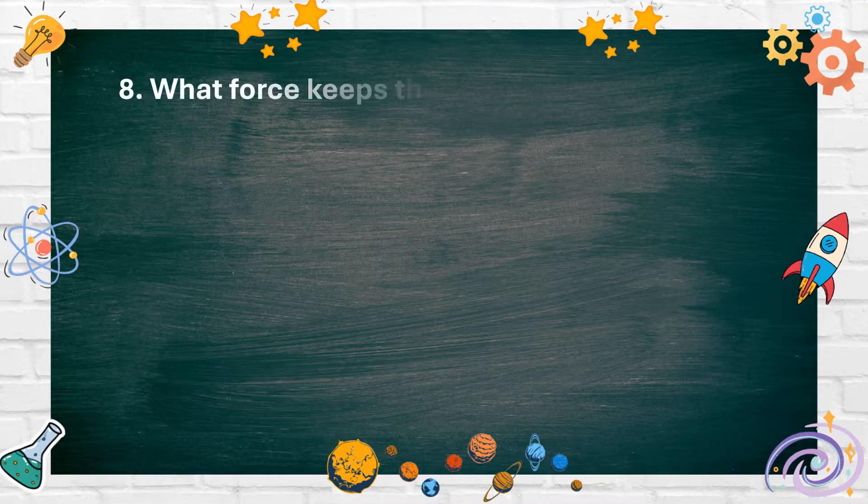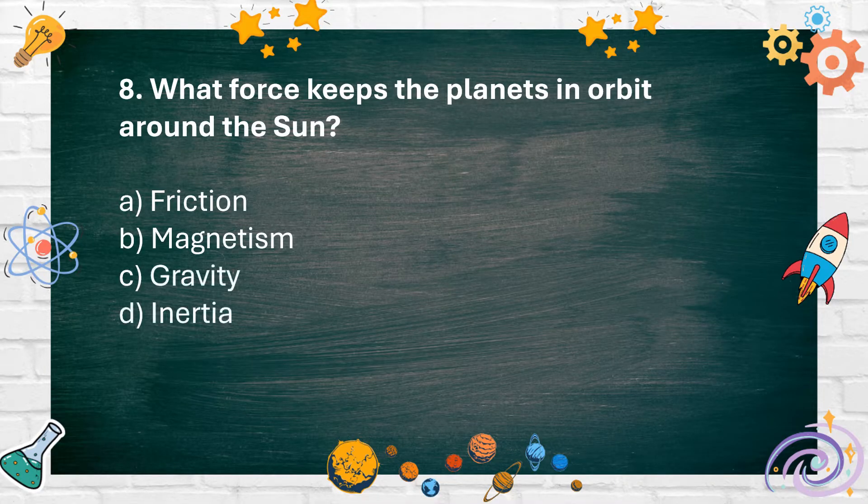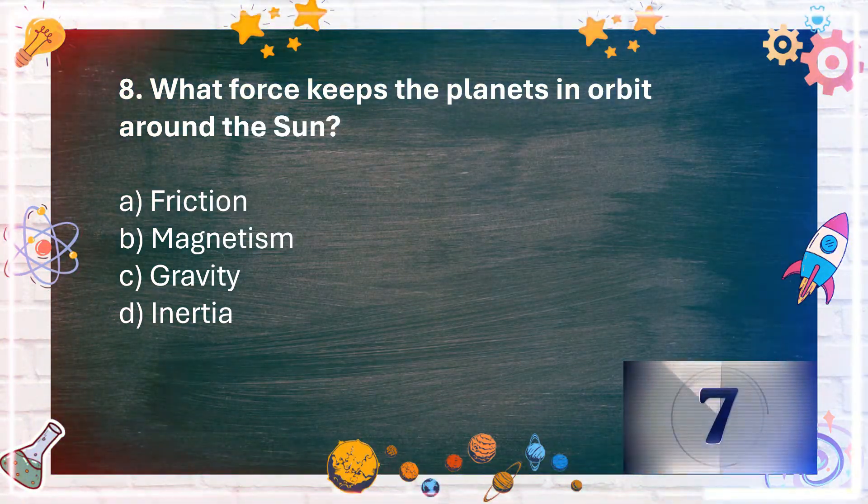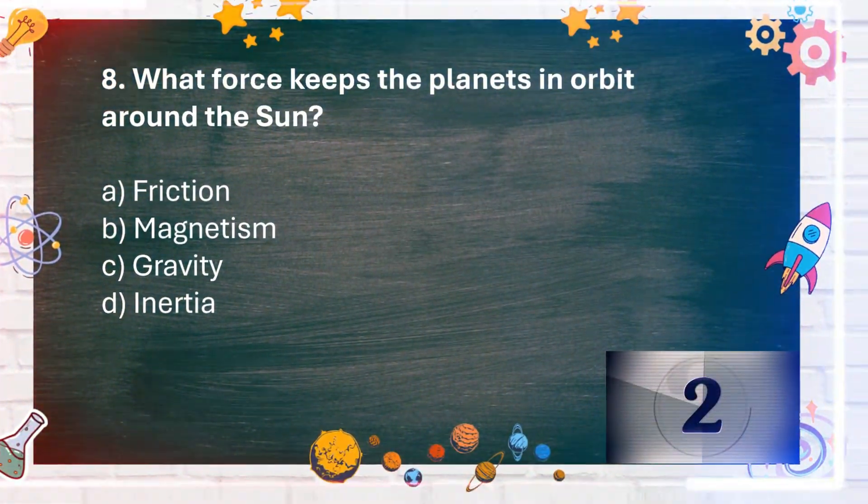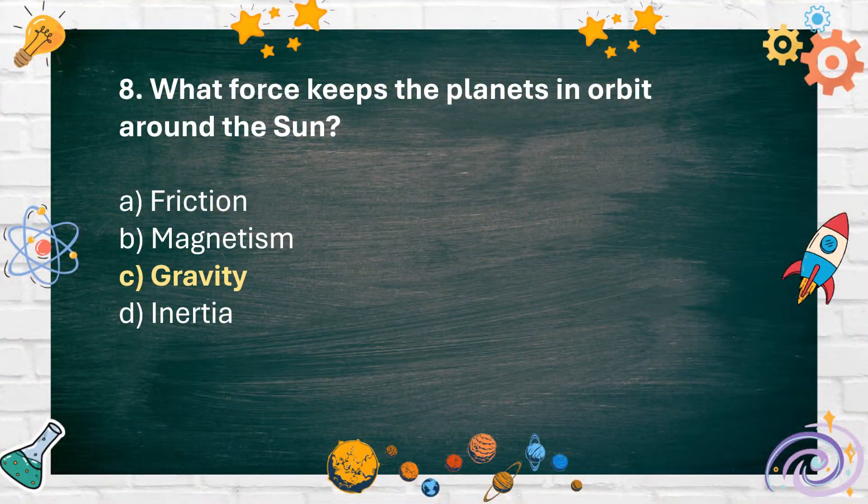Number 8: What force keeps the planets in orbit around the Sun? A. Friction, B. Magnetism, C. Gravity, D. Inertia. The answer is C. Gravity.